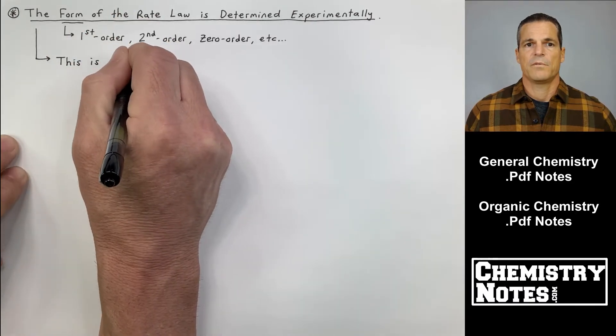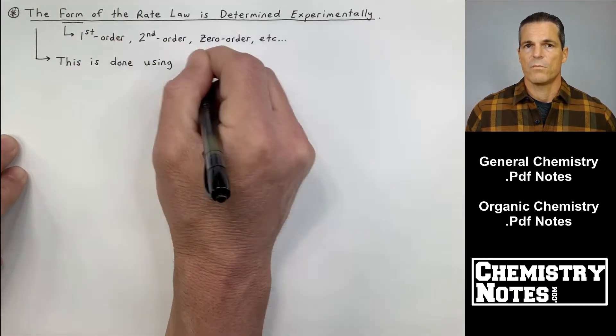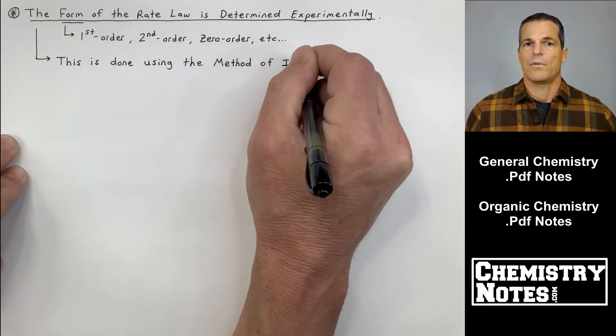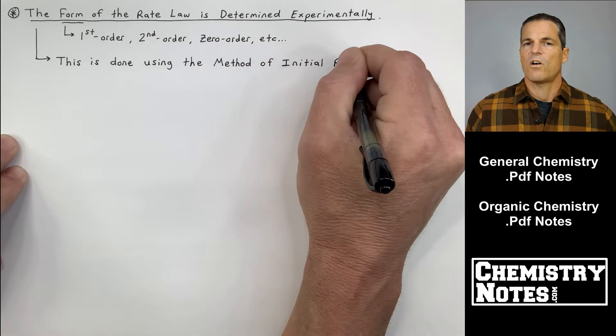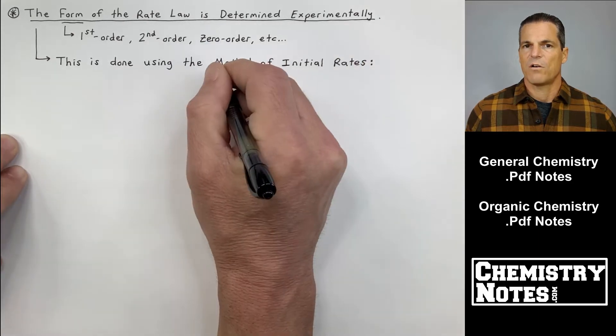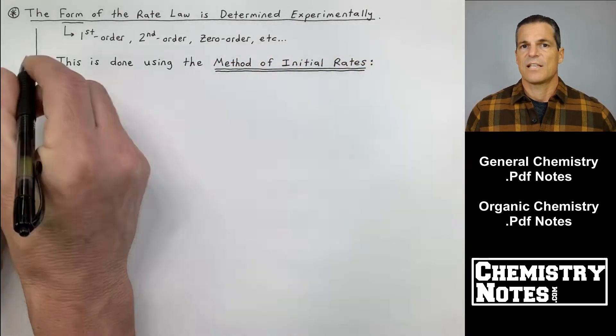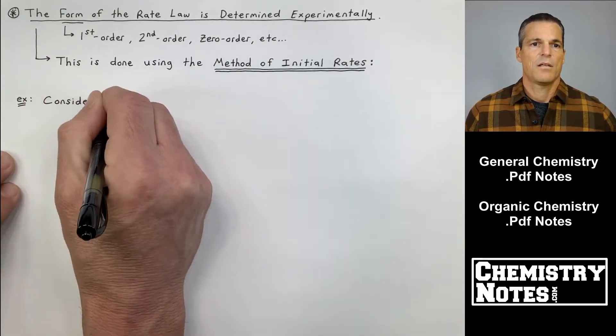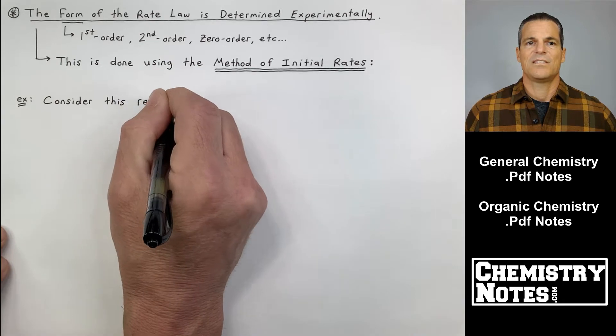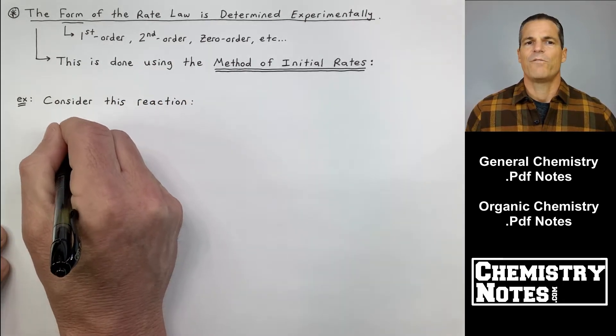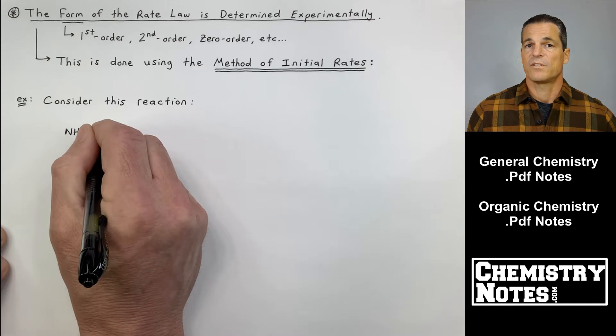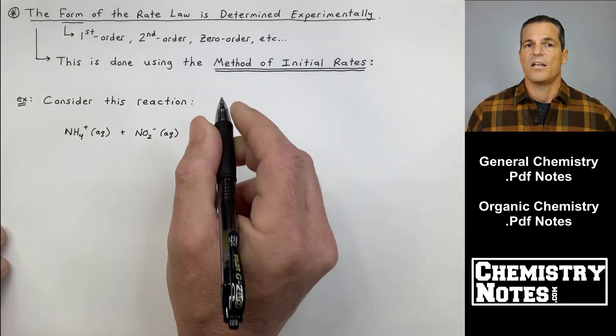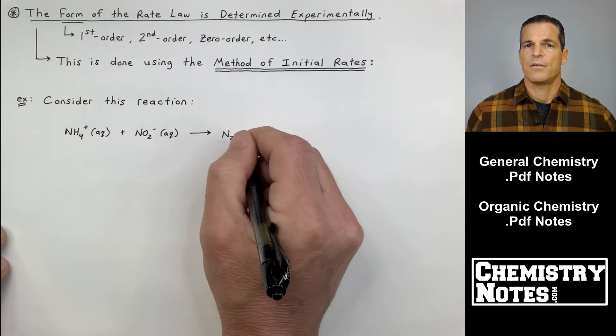At this point we've been able to draw the general form of the rate law but we have yet to solve for K. Or in the last example we did solve for N but there's a better way to solve for N that's more commonly used. At the top of page one of our notes it says the form of the rate law is determined experimentally. By form they mean is it first order, second order, zero order, etc.